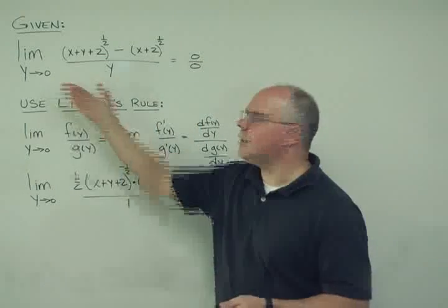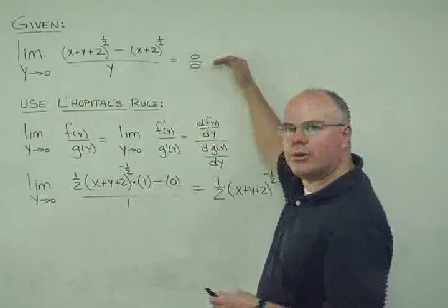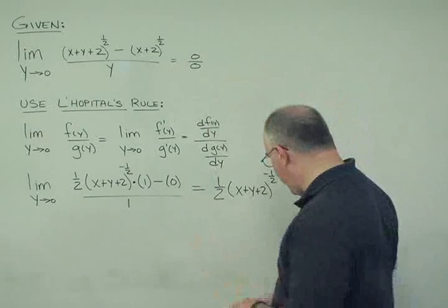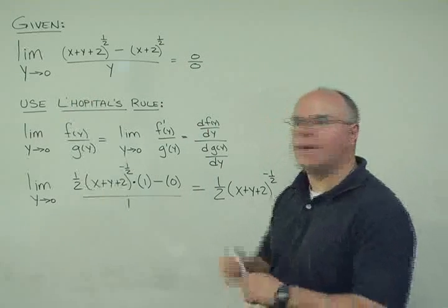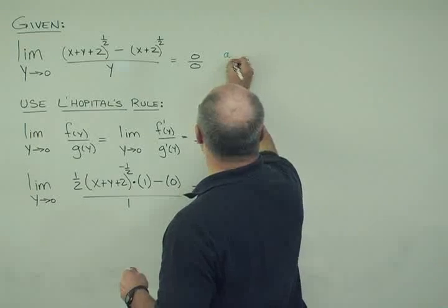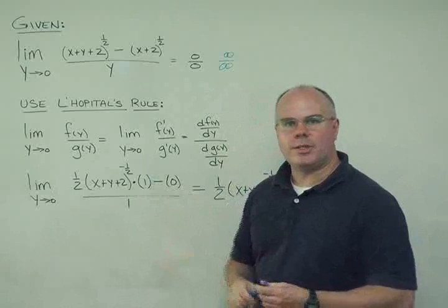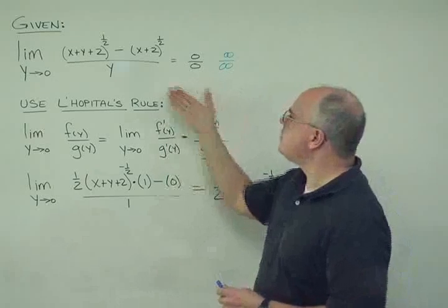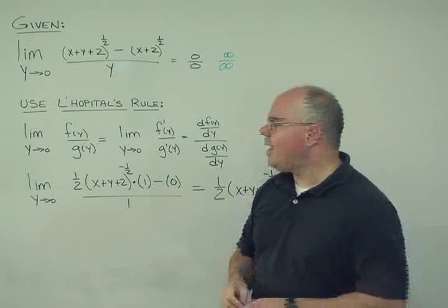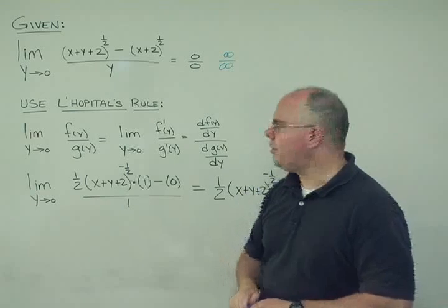Now in the special case when we're taking limits that we get either zero over zero, or the other case, alternatively, when we get infinity over infinity, we can use L'Hopital's rule, and L'Hopital's rule allows us to manipulate this and hopefully calculate a limit from it.